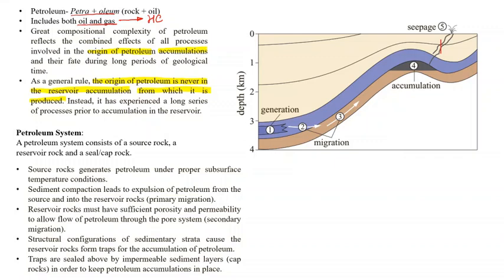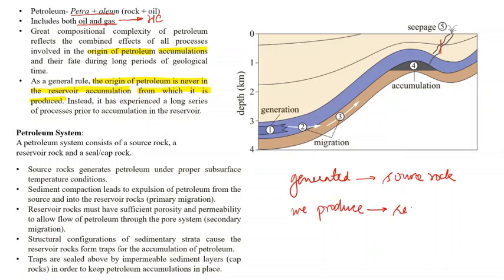This is a general rule: petroleum is not generated in the source rock, and we extract petroleum from the reservoir rock. The hydrocarbons get generated — meaning they are formed — in the source rock, while we produce or extract petroleum from the reservoir rock. For example, everybody has a water tank installed at their home. We fill water in that tank and then use it. But is that water originally from the tank? No — that water is normally groundwater which we pump using high-energy submersibles or pumps.